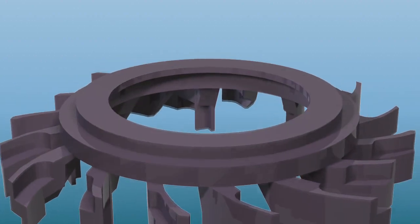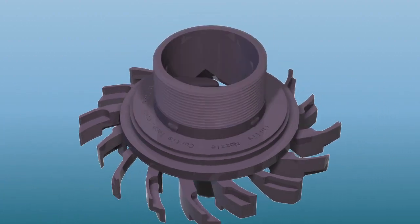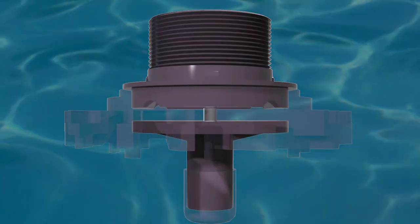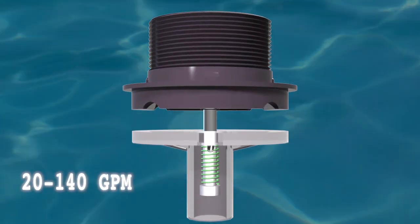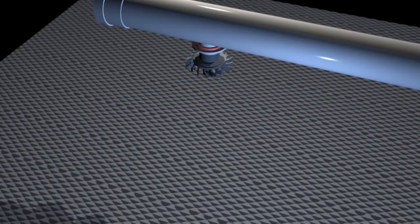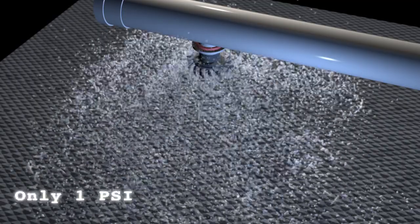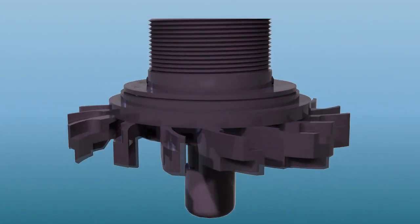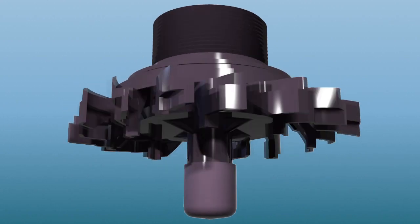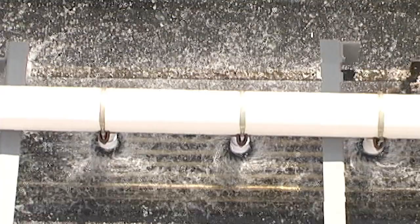The variable flow nozzle maintains that square water pattern by automatically adjusting to flow rates ranging from 20 to 140 gallons per minute, all at the very low pressure of only one PSI. The variable flow nozzle will significantly improve thermal performance and solve your flow control problem.